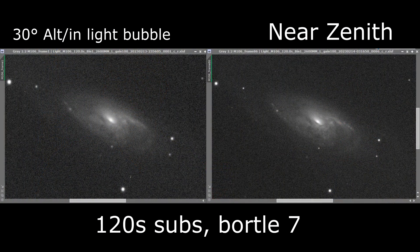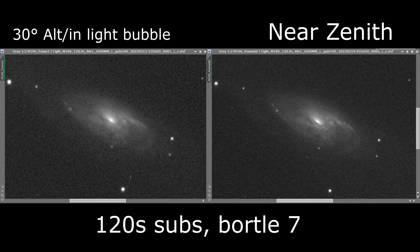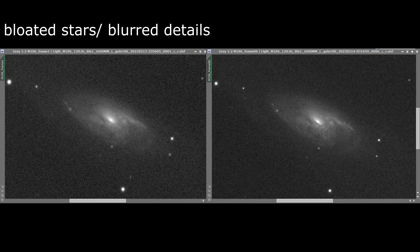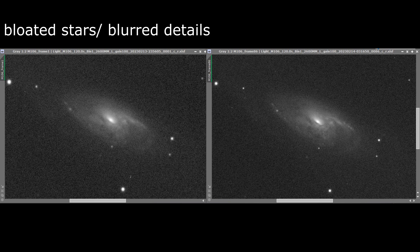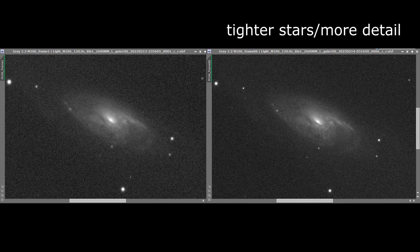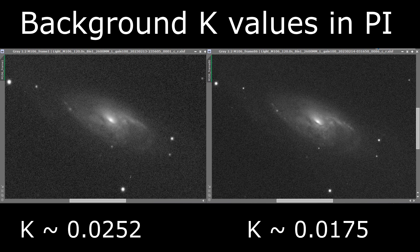For my new location, the northeast is where the bubble is. So I try to avoid that area as well. Learning to avoid these worst parts of your sky will pay off. Light pollution horizon discipline will improve your gradients and overall integration quality in terms of signal-to-noise ratio. Unfortunately, it also limits your imaging zone, but in my experience, it's well worth the trade-off. The difference between subs near zenith and subs in the bubble is substantial.